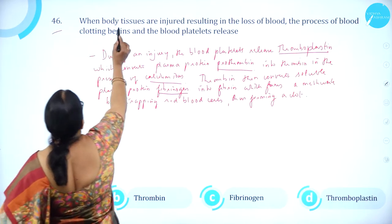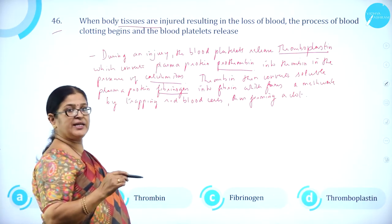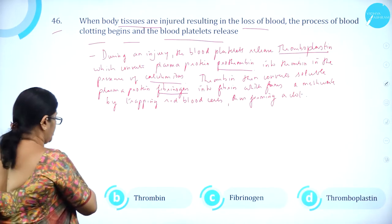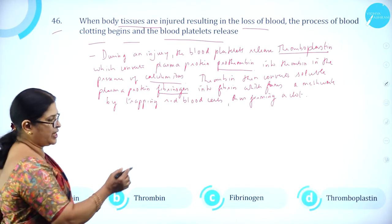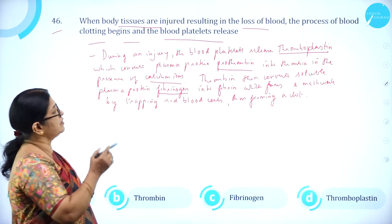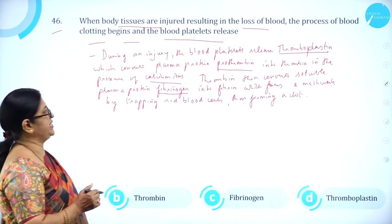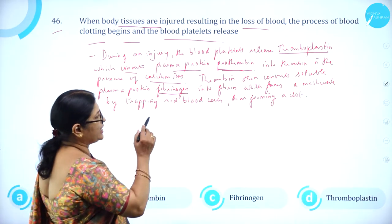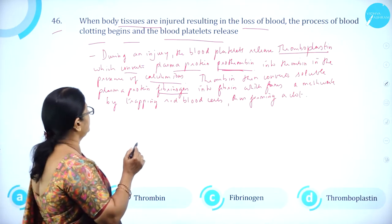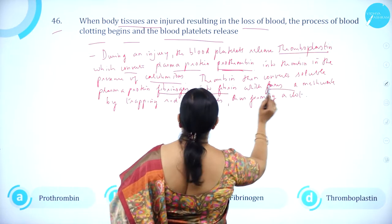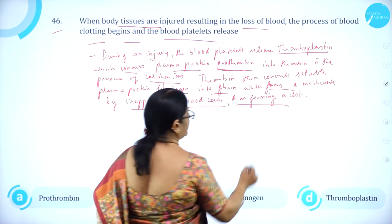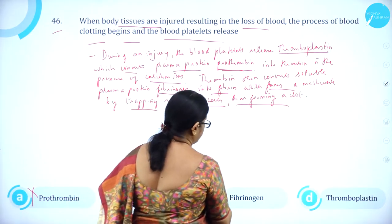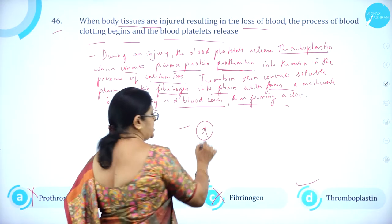Moving on to question number 46. When body tissues are injured resulting in loss of blood, the blood platelets release thromboplastin, which converts plasma protein prothrombin into thrombin in the presence of calcium ions. Thrombin then converts soluble plasma protein fibrinogen into fibrin, which forms a meshwork trapping red blood cells, thus forming a clot. So the answer is thromboplastin — option D is correct.